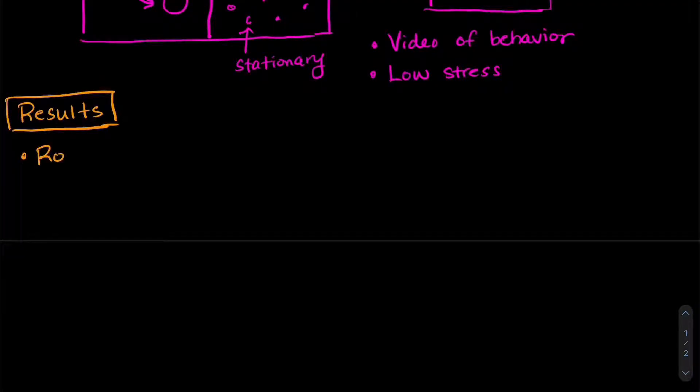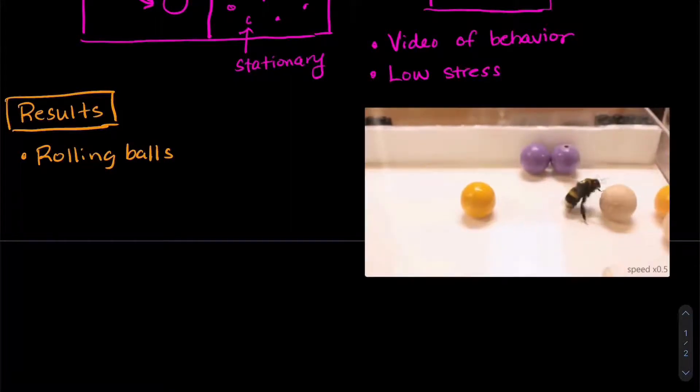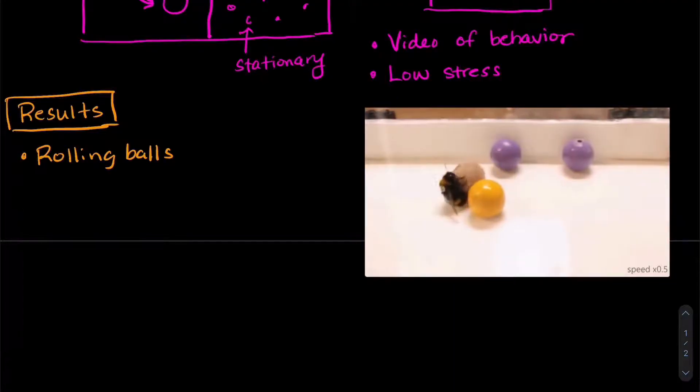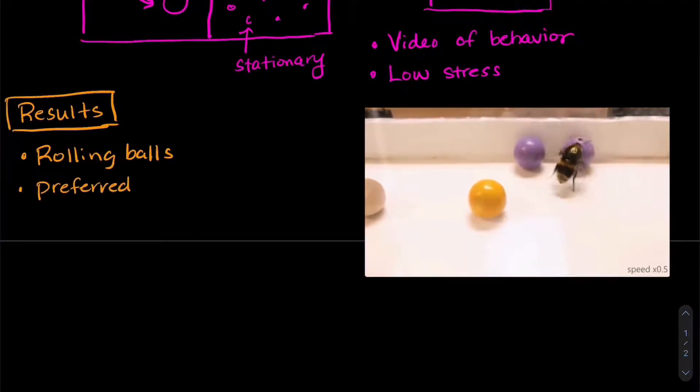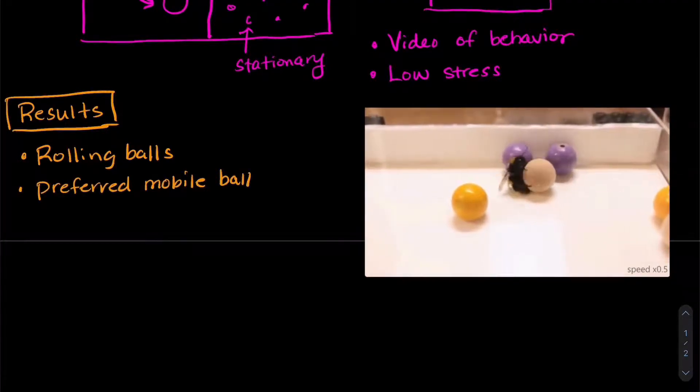First of all, they found that bumble bees really like rolling balls. And in fact, one of the bees rolled the balls 117 times over those 18 days. The researchers also found that once a bee explored the mobile ball area, they preferred going back to it.